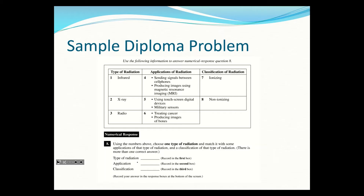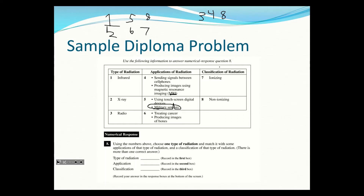Using the numbers above, choose one type of radiation, match it with some applications, and classify the radiation. If you picked infrared, it would be used for touchscreen devices, military sensors, anything that can see in the dark - and infrared is non-ionizing. X-ray would be for seeing bones and treating cancer, and that is ionizing. Radio waves are for sending signals between cell phones and MRI - magnetic resonance imaging - and radio waves are non-ionizing.